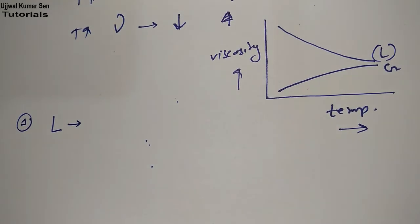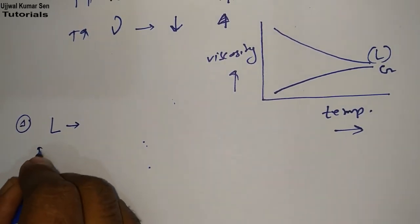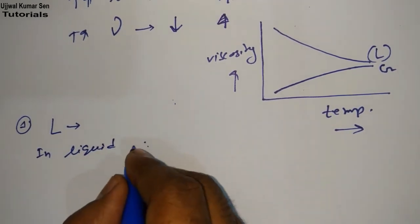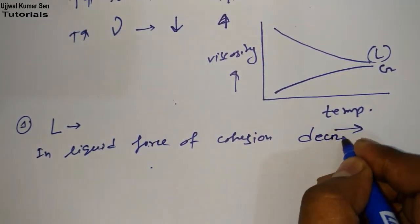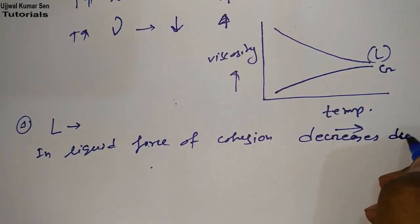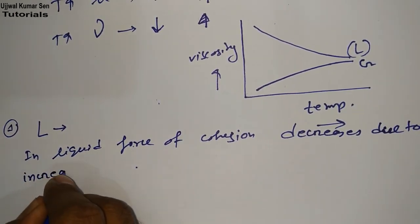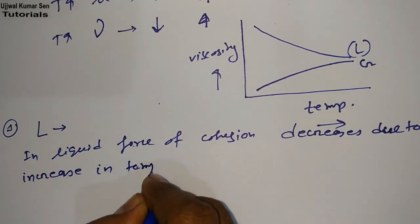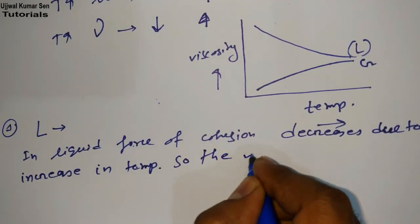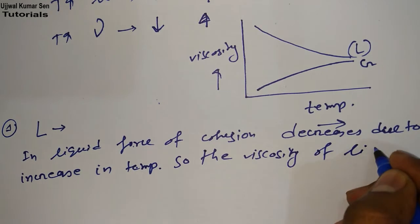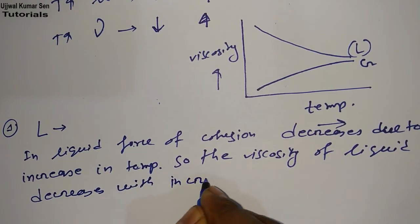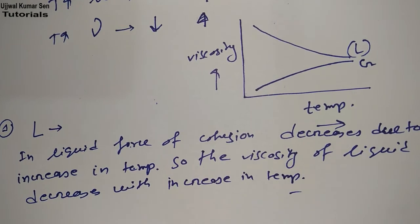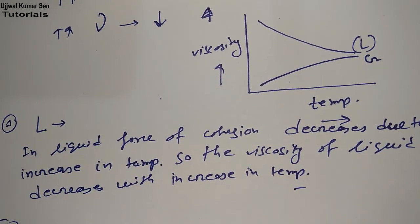First important point: in case of liquid, viscosity occurs because of molecular cohesion. In liquid, the force of cohesion decreases due to increase in temperature, so the viscosity of liquid decreases with increase in temperature.